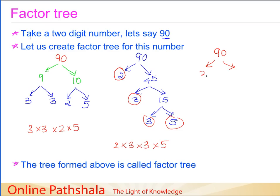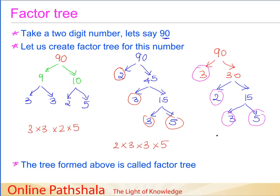There is yet another way: write 90 as 3 multiplied by 30. Factorizing 30 gives 2 multiplied by 15, and 15 gives 3 multiplied by 5. Circling the ends — 3, 2, 3, and 5 — the prime factors are again 2 × 3 × 3 × 5, confirming the same result. These structures are all called factor trees for the number, and they are useful for finding the prime factors of any given number.